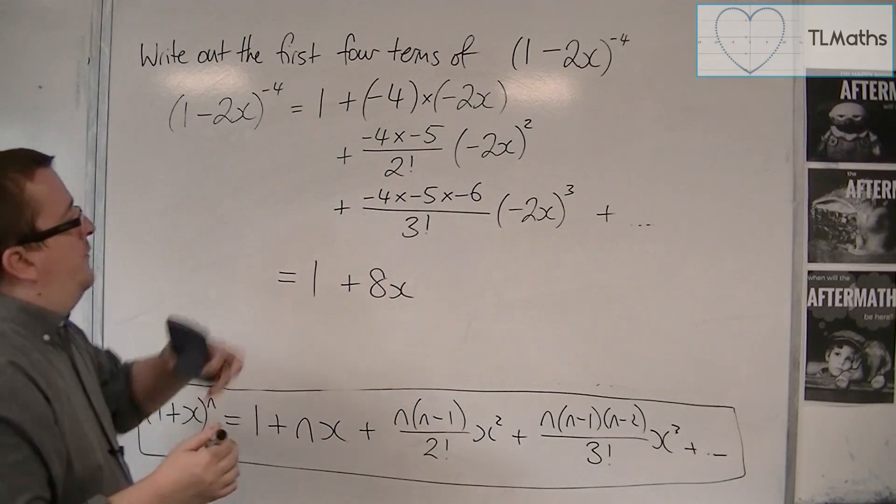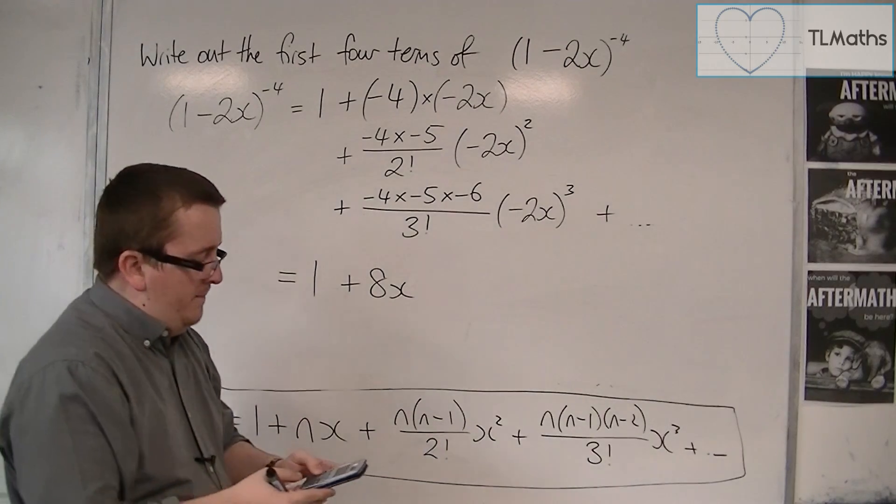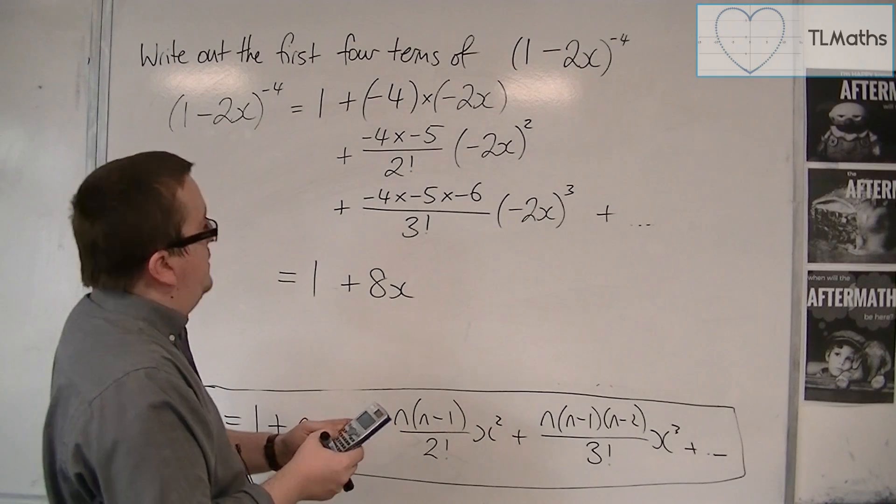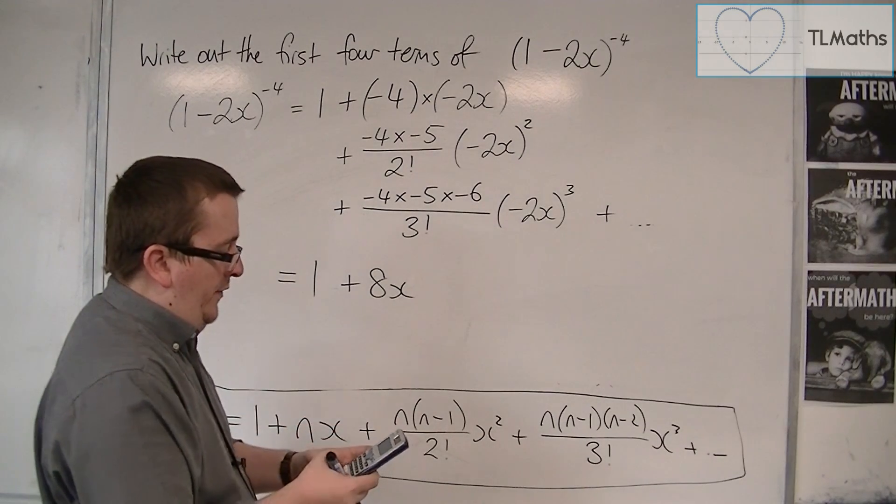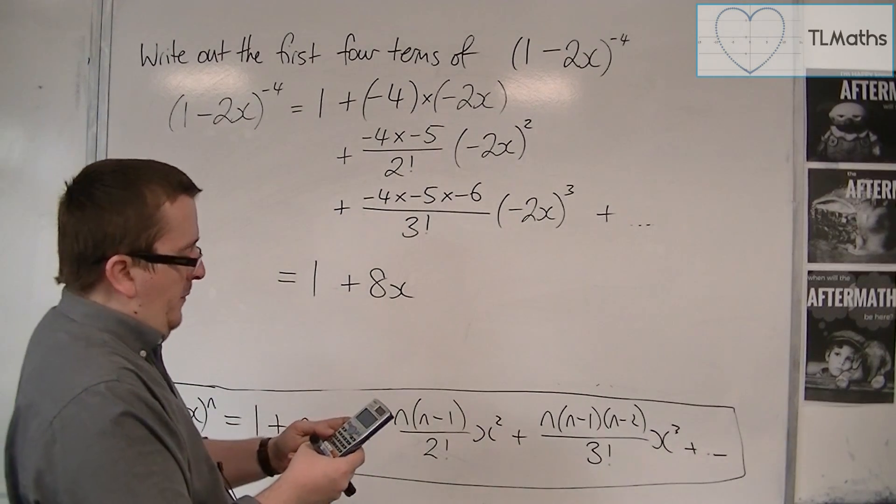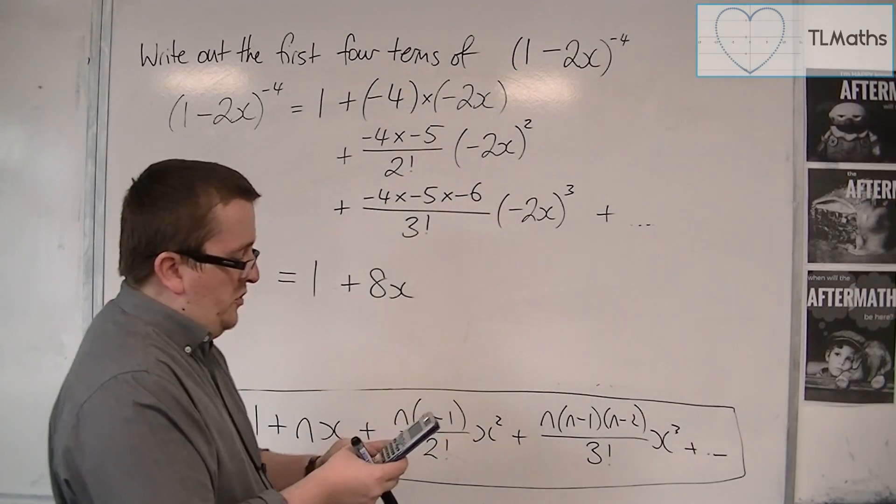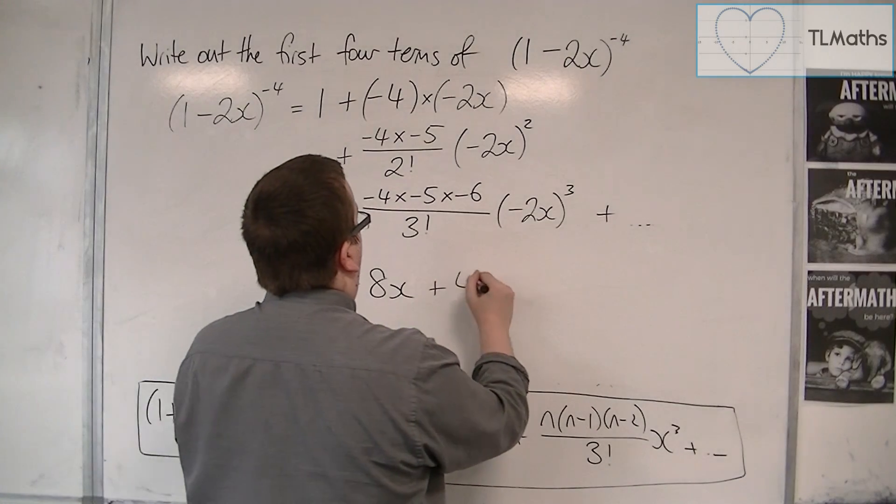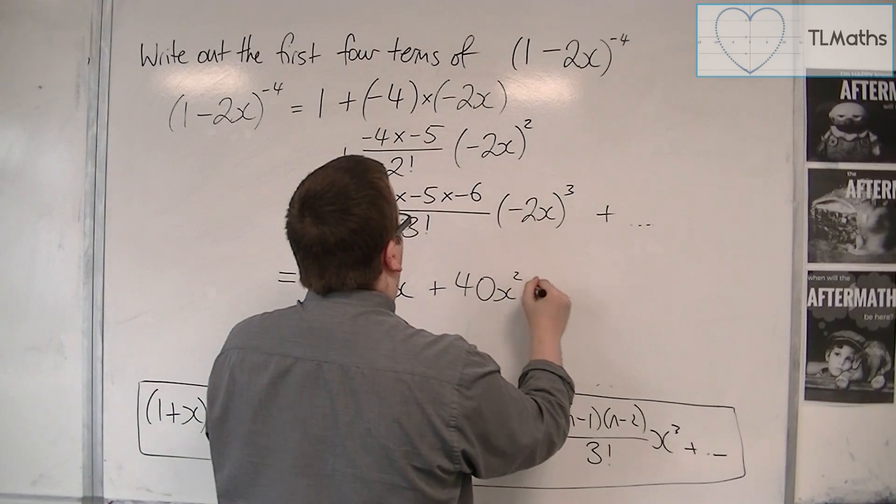Now, for each of these terms, it's good to get your calculator ready. We've got -4 times -5, divided by 2 factorial, so 1 times 2, times -2 squared. And that's 40. So plus 40x².